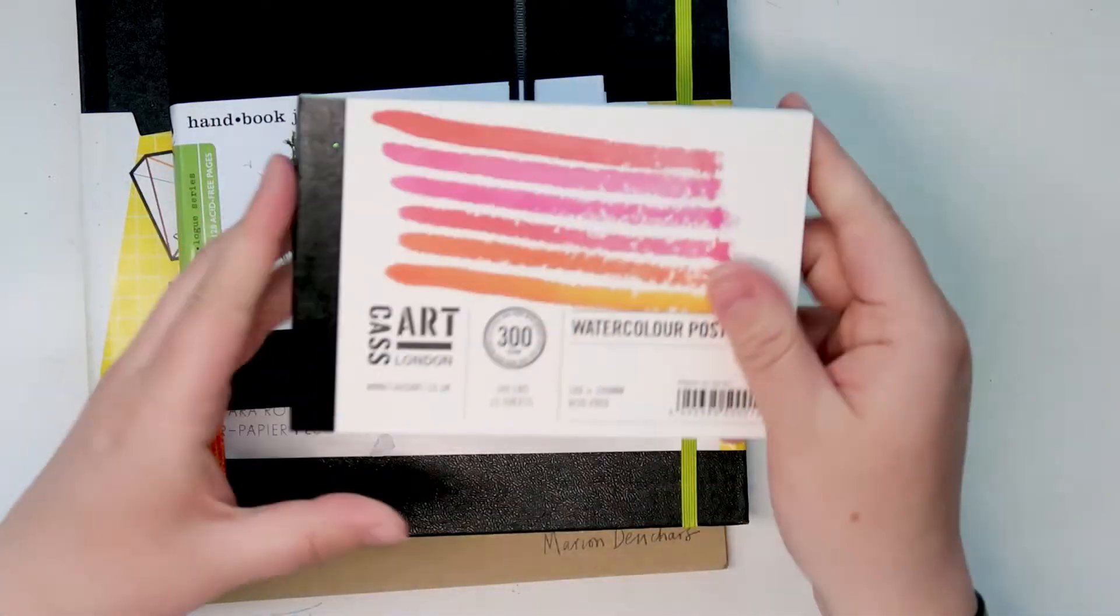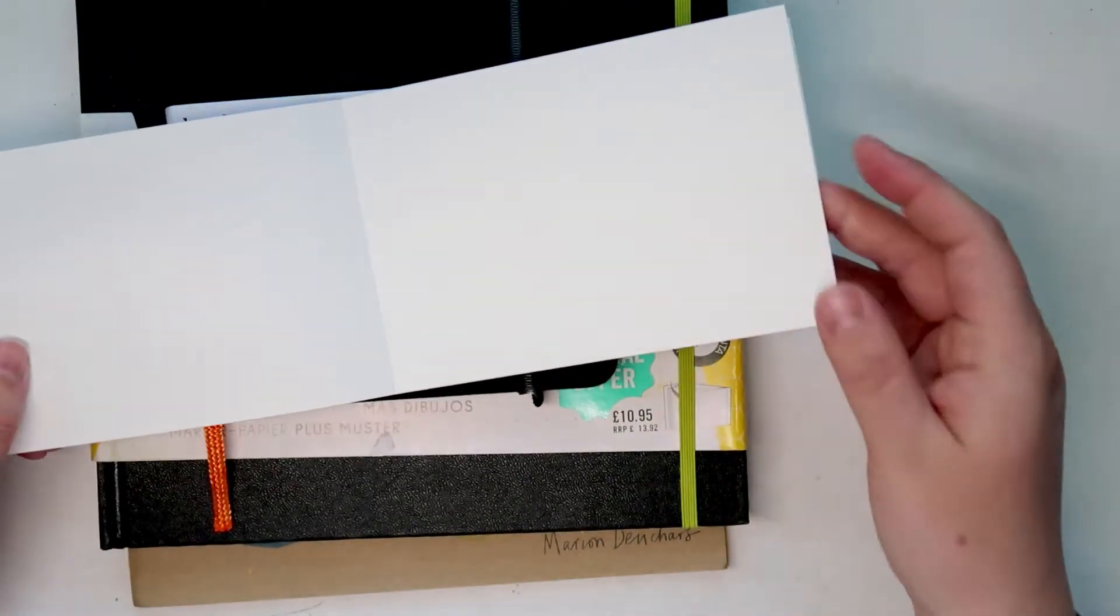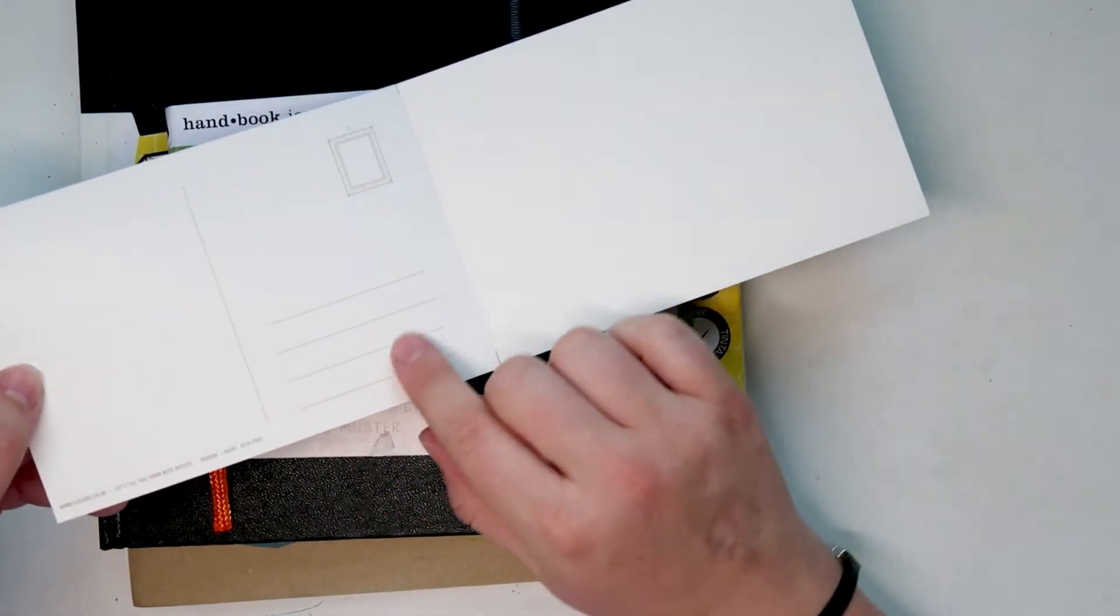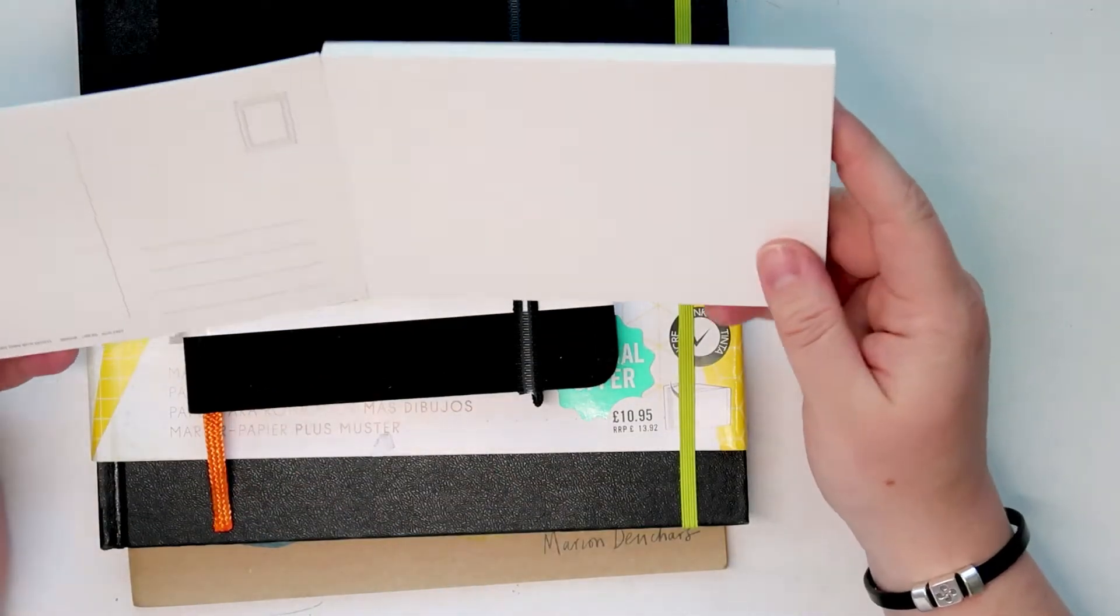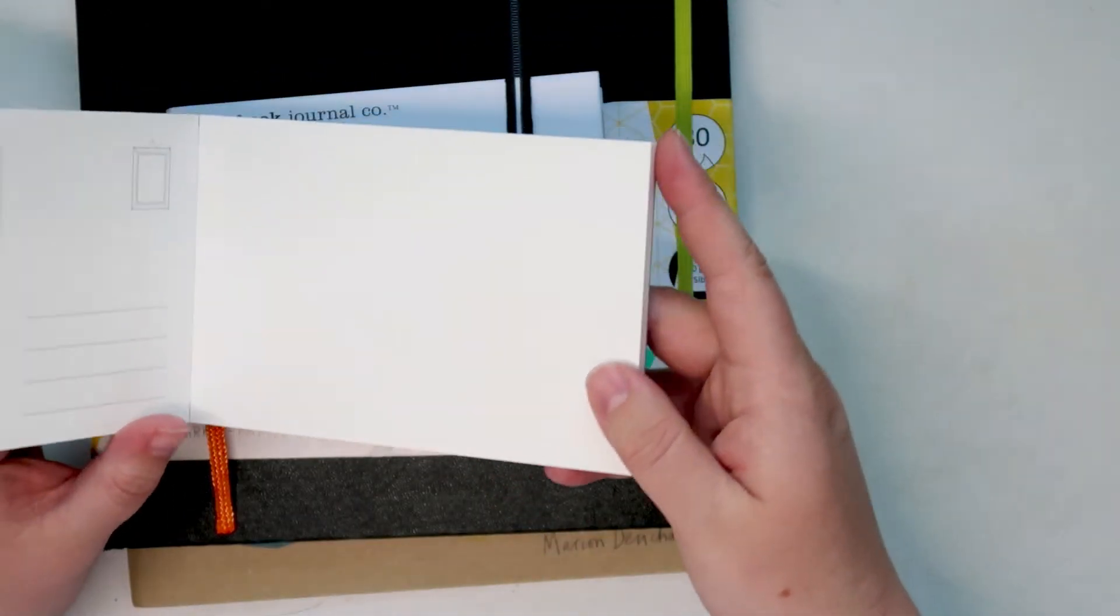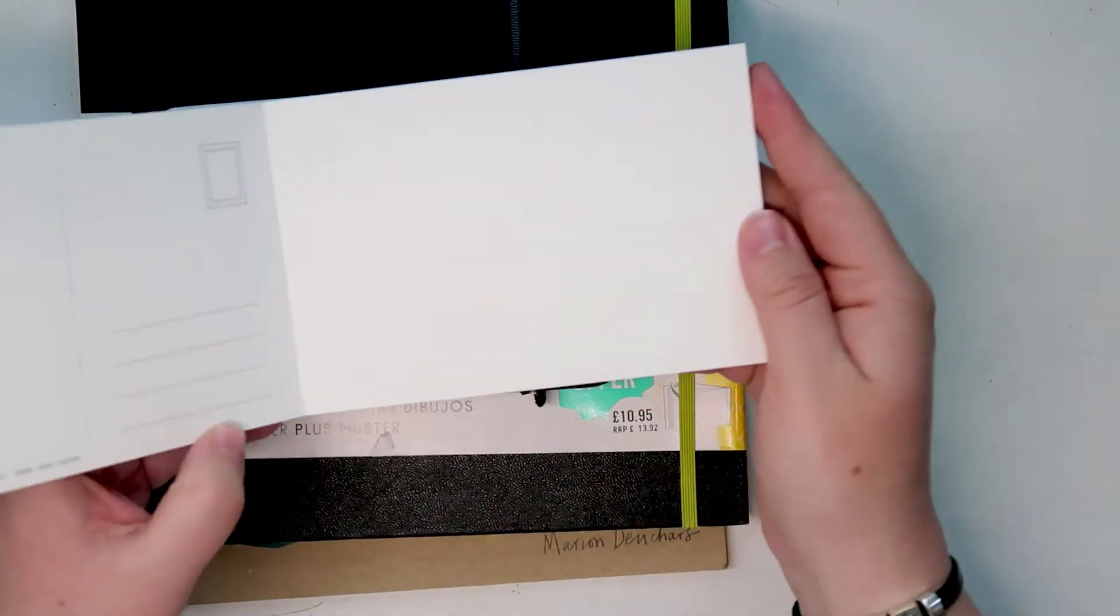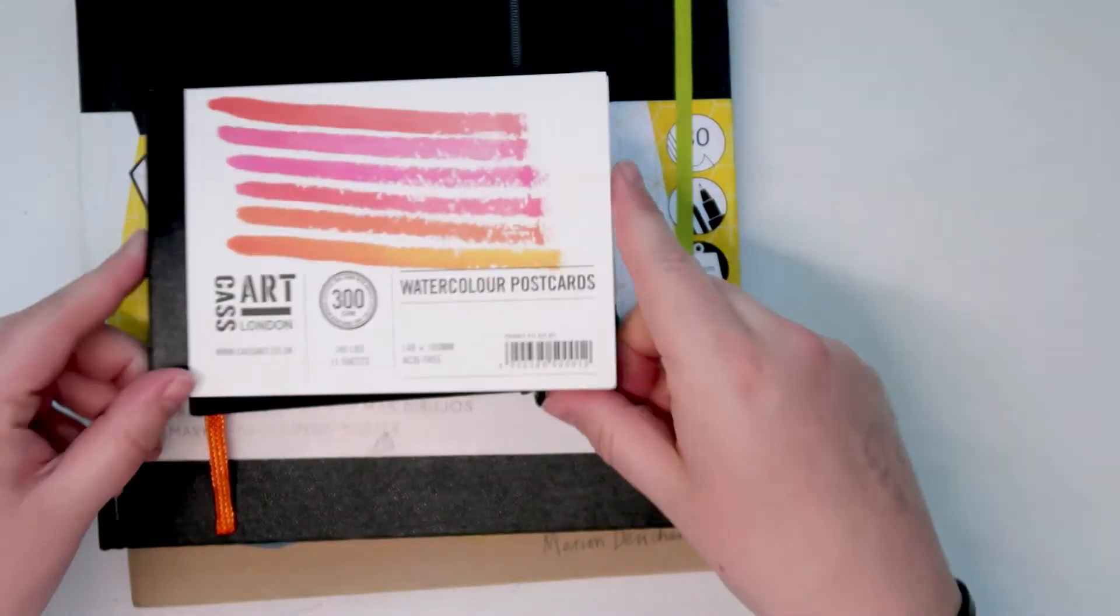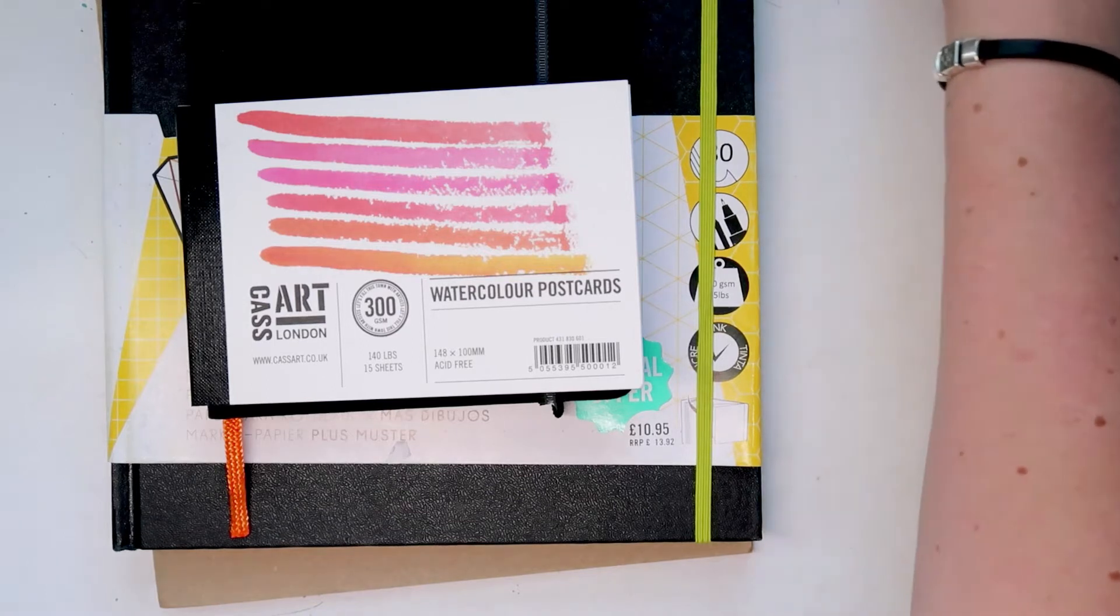And then I grabbed these watercolor postcards, which at first I thought were an awesome idea because it's like a piece of watercolor paper, really thick card on the back. You have a place for your stamp, the address, and a little message so you can send it to people in the mail. But then I thought I don't know if I want to watercolor something and send it without any protection through the Royal Mail service in England because I've seen how some of these letters arrive and I don't want it to get ruined. But I guess I'm just gonna go for it because nothing is permanent, right? You can't hang on to everything forever.